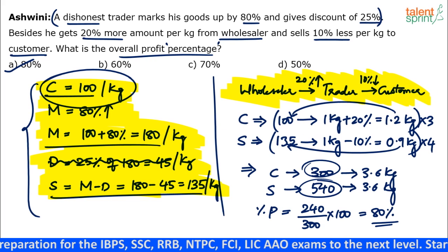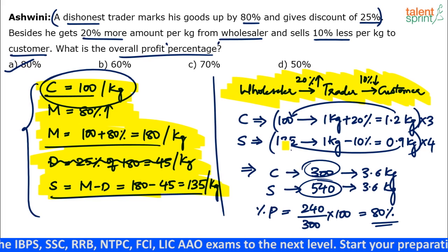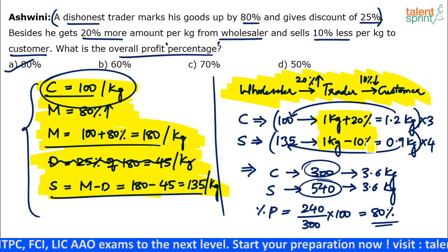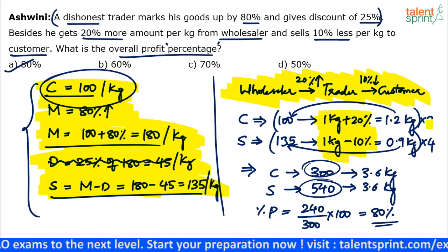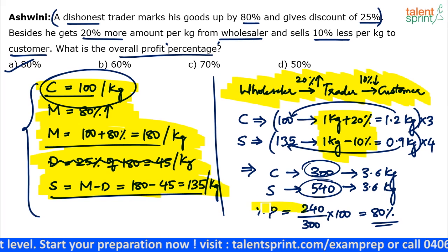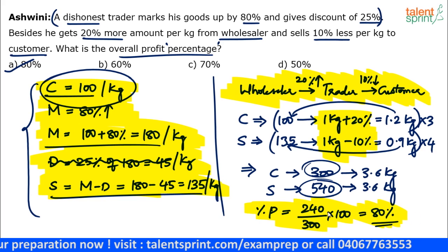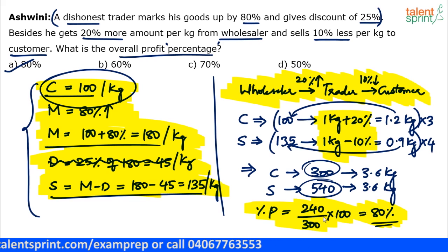The only steps to put on paper are: 100 rupees for 1.2 kgs, 135 for 0.9 kgs, and then the common multiple calculation. Don't write all the intermediate steps. Also, avoid writing out 240 divided by 300 times 100 with all the zeros — just cancel mentally and get 80 percent directly, saving valuable time.